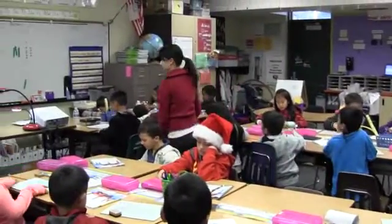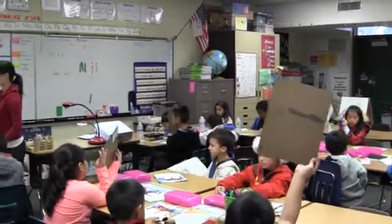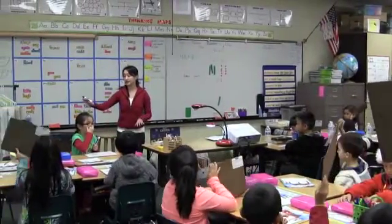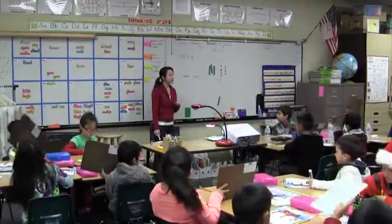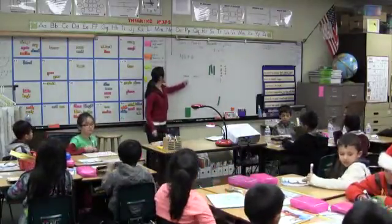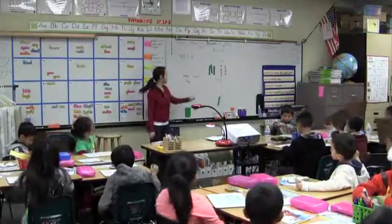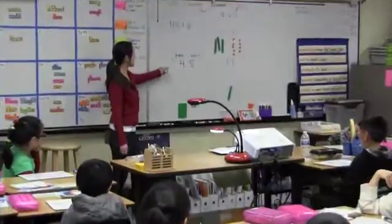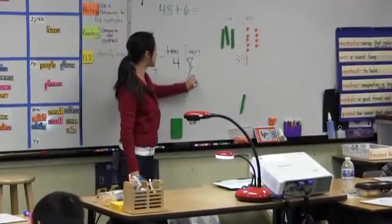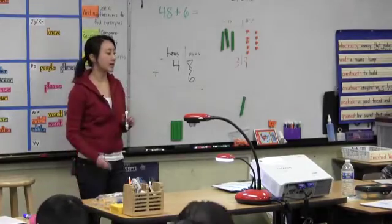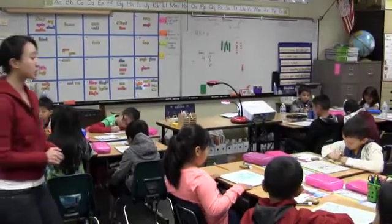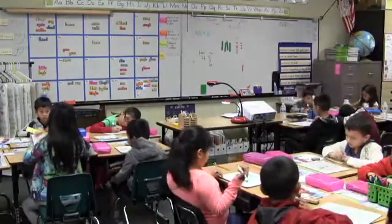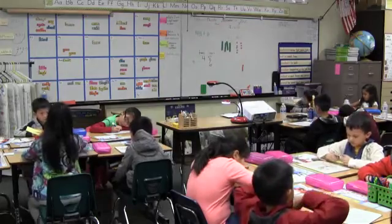Write it going down for me. Check to make sure it's in the right place value. Show me. This is what it should look like: you should have a four in the tens place, an eight here, plus sign out here, and six should be in the ones place right underneath the eight. Now try solving it. If you regrouped, you need to show me that you regrouped. If you did not regroup, that's fine — but if you did, you need to show all your work.